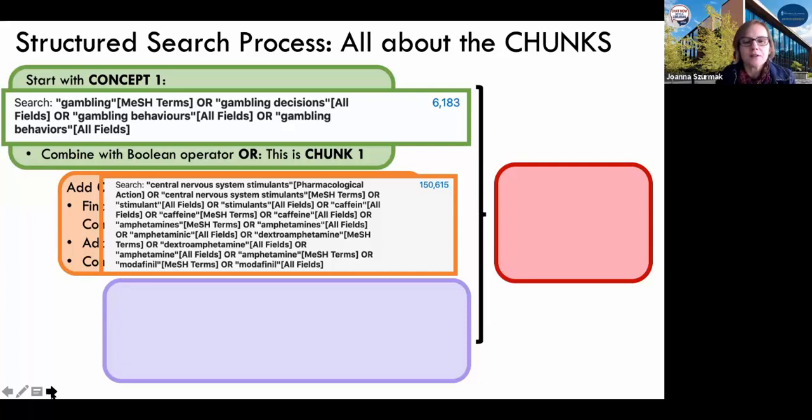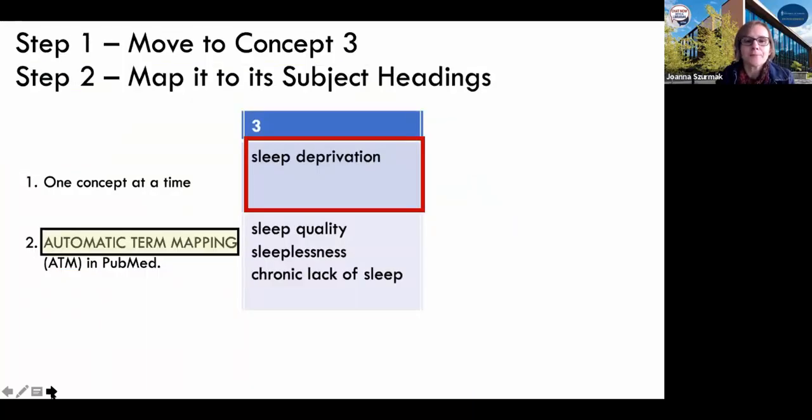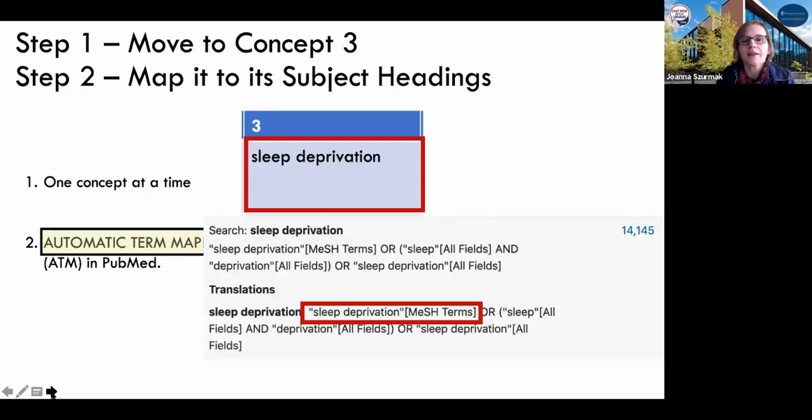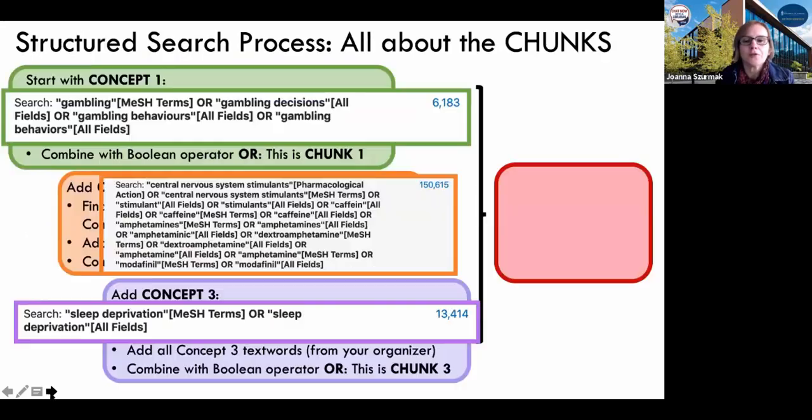Now we're not going to be looking for healthy human adults at this point because gambling—whereas animals do engage in risk-taking and risky behaviors, gambling we tend to think of as human. So it's somewhat exclusive of that final concept. We'll just do our third concept now. Our third concept is sleep deprivation. Let's do some automatic term mapping for that. We find out that we have a MeSH term for sleep deprivation. Fantastic. We also have an all fields, which means a text word sleep deprivation. We have a small number of entries for gambling, a smallish number for sleep deprivation, an absolutely huge number for our central nervous system stimulants.